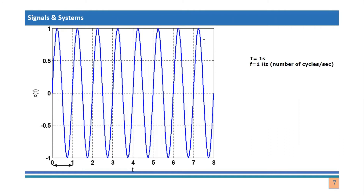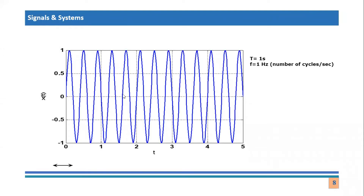Let's take another example and calculate these values for that graph. In this graph, there are various cycles completed in one unit of time. The time axis starts from zero, and one second is completed here. In this duration you can see a number of cycles are present. A cycle starts from a position, goes to its maximum value, comes down to the negative peak value, and returns to its original value — that is one cycle. If you count carefully, you can see approximately three cycles in this duration.